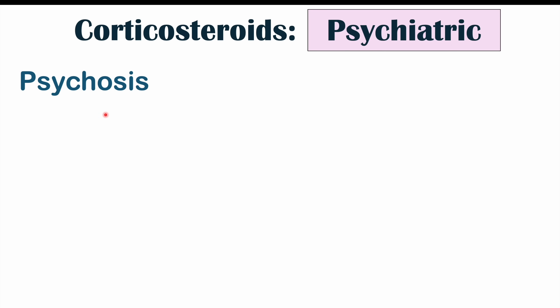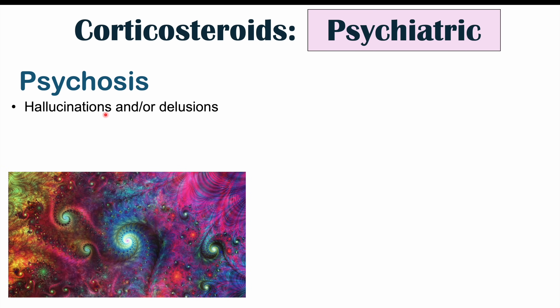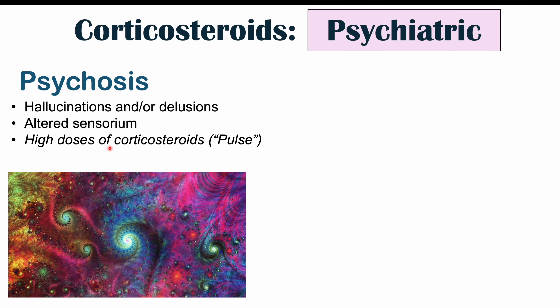Moving on to psychiatric effects, we can see psychosis in patients taking corticosteroids, especially at very high doses. Psychosis with corticosteroid use can involve hallucinations, delusions, and altered sensorium — where the patient's senses are distorted or altered. This is often seen with pulse steroid therapy, where very high doses are given for conditions like certain autoimmune kidney diseases. Patients given pulse steroids can become disoriented, experience hallucinations and delusions.